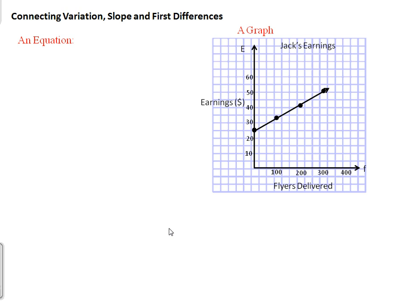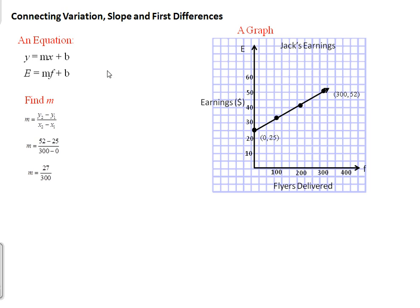Now let's write an equation. We need two pieces of information: the slope and the y-intercept. I'm going to substitute in that our dependent variable is e and our independent variable is f. Finding the slope first — we choose two points, the first and the last. We have 52 minus 25 over 300 minus 0, which is 27 over 300, or reduced to 9 over 100. We then find our b value or initial value.